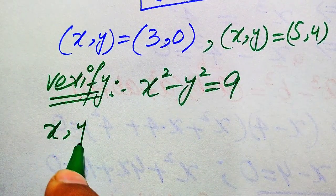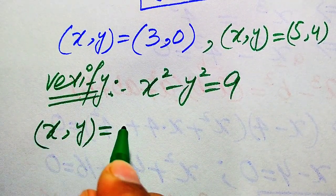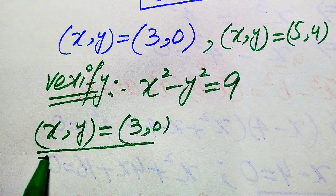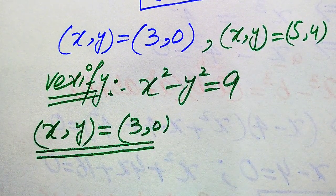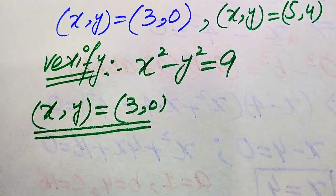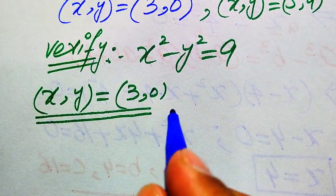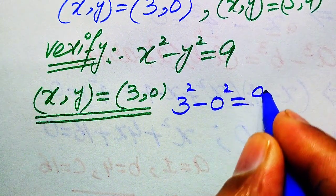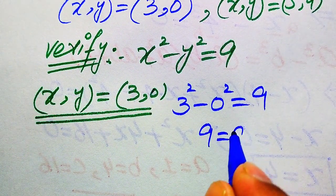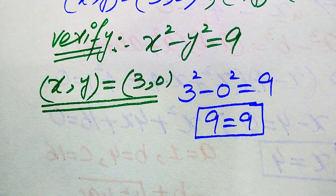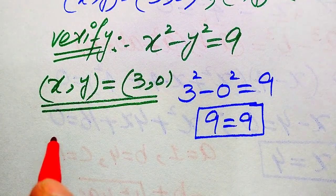Verifying the first solution (x, y) equals (3, 0): substituting x equals 3 and y equals 0 gives 3 squared minus 0 squared equals 9, which is 9 equals 9. This is satisfied, so the first solution is valid.